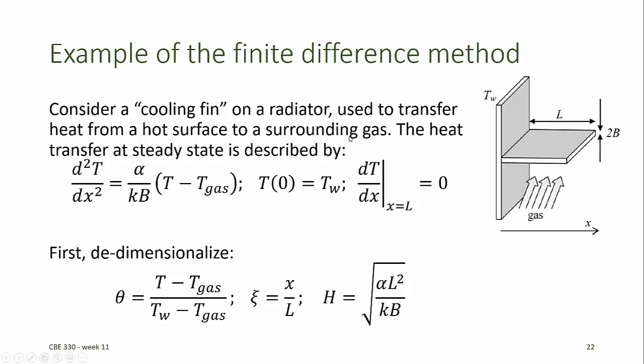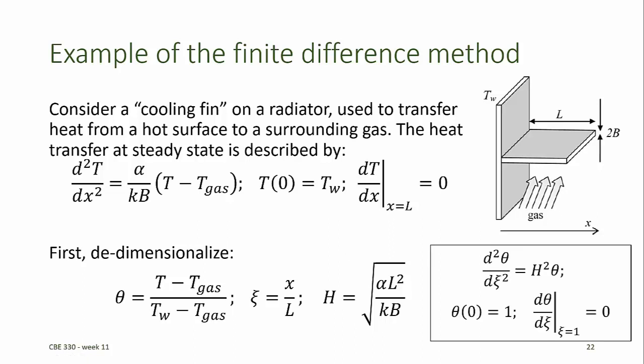To solve this boundary value problem, we might prefer to first de-dimensionalize it. If you were to apply the Buckingham pi theorem to this problem, you would find out that there are three pi variables required. We can de-dimensionalize this by defining a dimensionless temperature, a dimensionless length parameter, and a dimensionless heat transfer parameter. Rewriting this differential equation in the dimensionless form gives this second order equation with these boundary conditions.